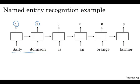One way to be sure that Sally Johnson has to be a person rather than say the name of a corporation is that orange farmer is a person. So previously, we had talked about one-hot representations to represent these words, x1, x2, and so on. But if you can now use the featurized representations, the embedding vectors that we talked about in the last video,